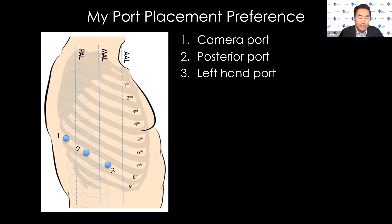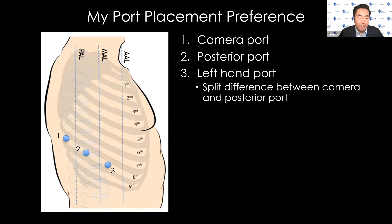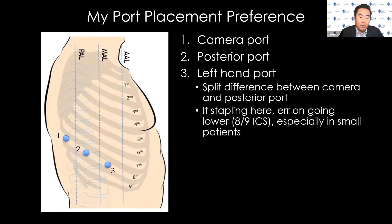Next, I place the left-hand port — in a right-sided approach I split the difference, and using the 4-8-8 rule I'll be eight centimeters between ports one and two and between ports two and three. If you're going to staple from this port, it must be a 12-millimeter trocar. In a small patient, err on placing this port lower rather than higher — you need room to clear the joint of the stapler so that you can staple with enough space.